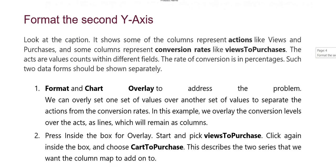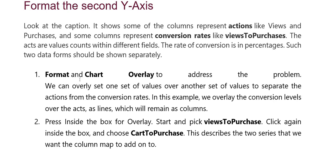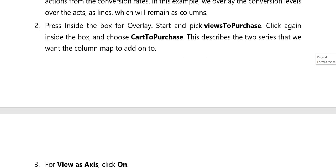Format the second Y-axis. Here you put the format and chart overlay. To address the problem, we select one set of values over another set of values to separate conversions from the conversion rates. For example, we overlay the conversion levels over the X-axis lines, which will remain as columns. Press inside the overlay box, pick views to purchase, click again, and choose cart to purchase — described as column to add on it.